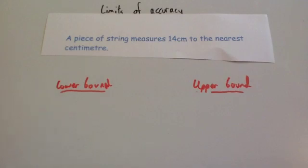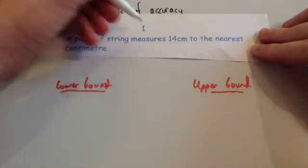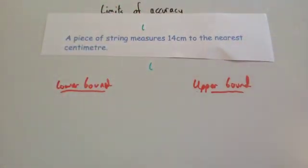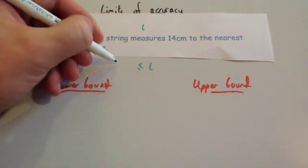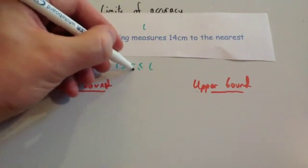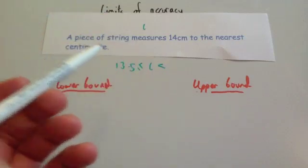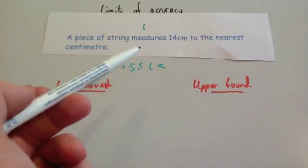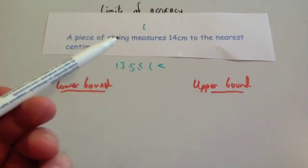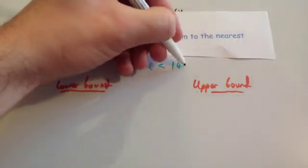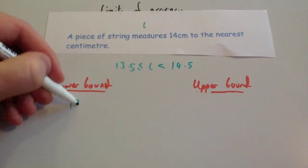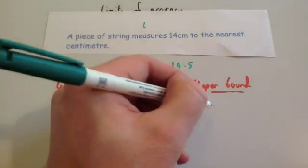A piece of string measures 14 centimetres to the nearest centimetre. Let's call the length of the string L. Rounded to the nearest centimetre, 13.5 would be the lowest possible value that rounds up to 14 — so 13.5 is the lower bound. For the upper bound, values like 14.1, 14.2, 14.3, 14.4, and 14.49 recurring all round to 14, so 14.5 is the upper boundary. Therefore, the lower bound is 13.5 and the upper bound is 14.5.